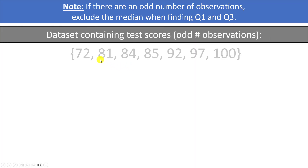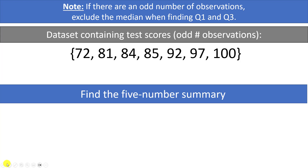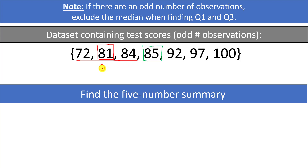Here is a data set containing test scores with an odd number of observations — seven values. The five-number summary will consist of the minimum, which is 72, and the maximum, which is 100, but we also need the quartiles and median. The median is the single value in the middle, which is 85. Excluding 85, the bottom half is 72, 81, and 84; the median of those is 81, so Q1 = 81.